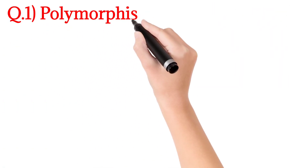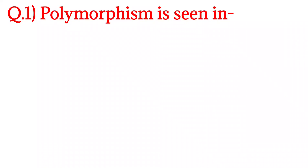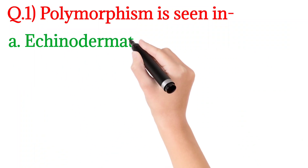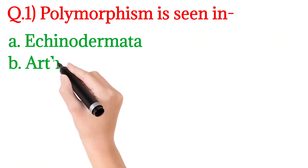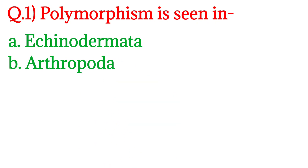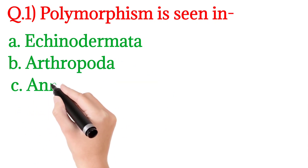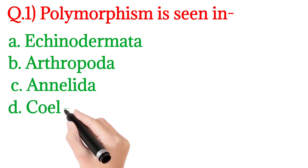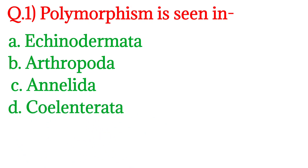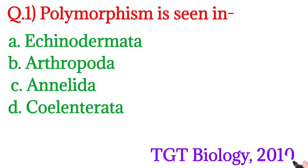So here is the first question: Polymorphism is seen in — this question was asked in TGT Biology 2010.